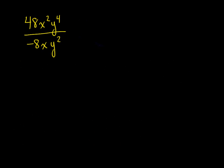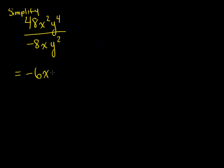Here's an example of a rational expression — a polynomial expression in the numerator and a polynomial expression in the denominator. In this case we have a monomial divided by a monomial, so one term divided by one term, and we want to simplify. Dividing piece by piece: 48 divided by negative 8 is negative 6, x squared divided by x is x, and y to the exponent 4 divided by y squared is y squared. So negative 6xy squared is the simplified version of this rational expression.